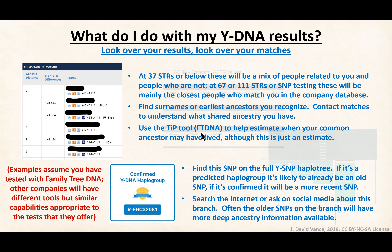My suggestion is not to use genetic distance itself for precise analysis. Genetic distance is not a reliable predictor of the age of your common ancestor. Although you can usually treat genetic distance order as a comparative relationship — smaller genetic distance should mean closer — that's not a guarantee and doesn't predict how close. Use the TIP tool and other tools to get a better sense of when people are connected, rather than relying on genetic distance alone.